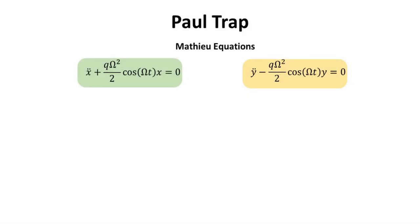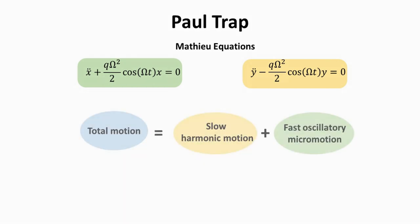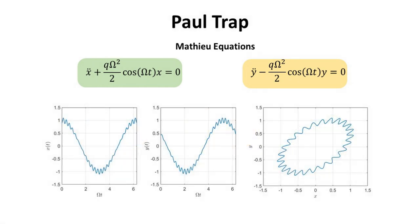The general characteristics of its solutions are known to have a slow harmonic component and a fast oscillatory one. We show here the solutions to the Mathieu equations over the course of one period. We note that the motion is composed of a slow harmonic part plus the fast micro-motion. The frequency of these motions will be calculated as follows.